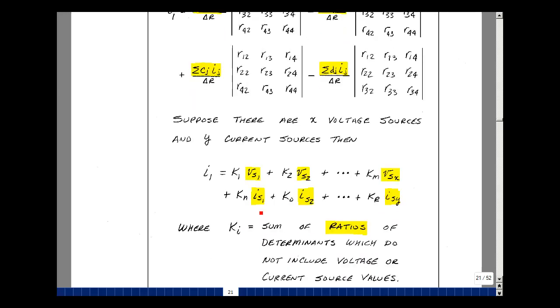Suppose that I set all of these sources equal to 0 but 1. Then I can solve for K1. If I were to set all the sources equal to 0 but this one, I could get K2. And so on down the line through K sub R.